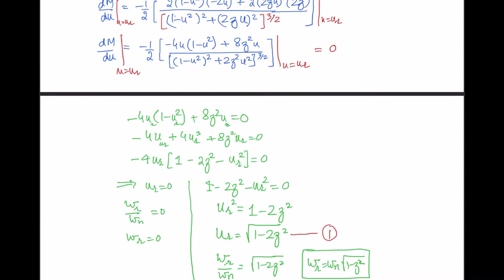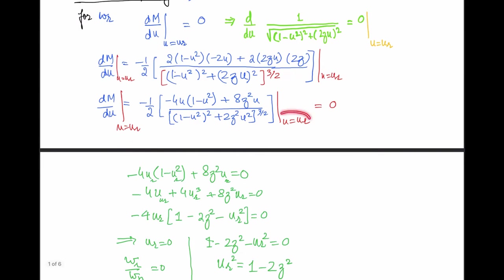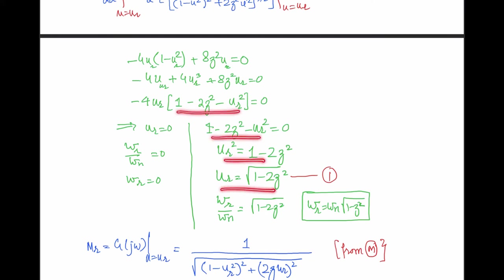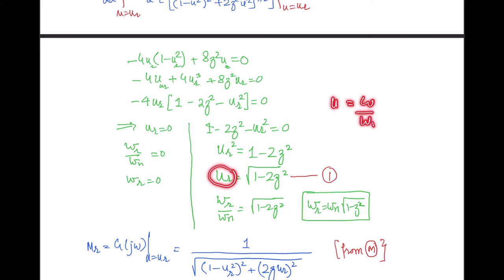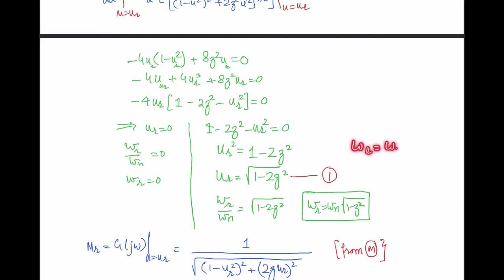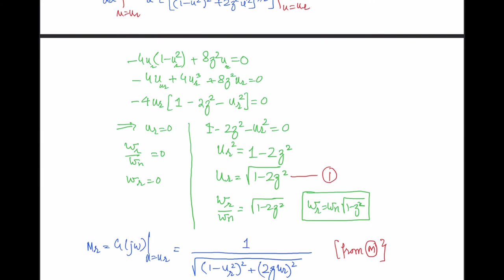Taking the derivative and simplifying gives: -4ur(1 - ur²) + 8ζ²ur = 0. Since -4ur cannot be zero (otherwise resonant frequency would be zero), solving the remaining factor gives ur = √(1 - 2ζ²). Since ur = ωr/ωn, the resonant frequency is ωr = ωn√(1 - 2ζ²), which depends on the natural frequency and the damping factor ζ.